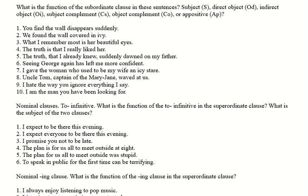Number five: 'the plan for us all to meet outside was stupid.' 'Was' is clearly the main verb; the other verb is the infinitive form 'to meet,' which is not the main verb. 'Was' needs a subject — what was stupid? What was stupid was 'the plan for us all to meet outside.' So 'the plan for us all to meet outside' is the subordinate clause playing the role of subject. And obviously 'us all' is the subject of 'to meet.'